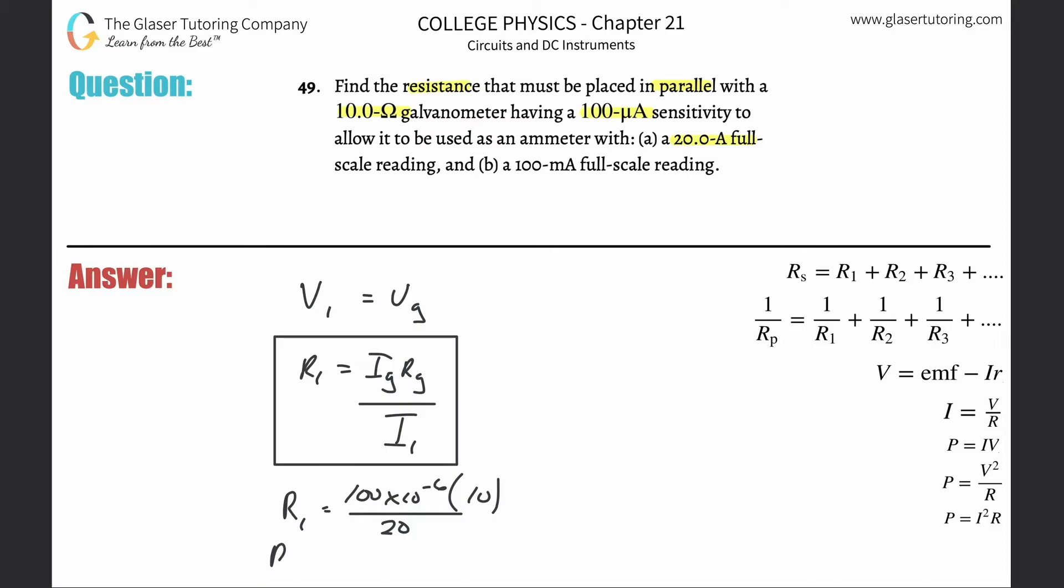All we now simply have to do is plug this into the calculator. So there's going to be 100 times 10 to the minus 6 times 10 divided by 20, and we get 5 times 10 to the minus 5, so 5.00 times 10 to the minus 5 ohms. If you needed microohms or anything like that, obviously do the conversions.